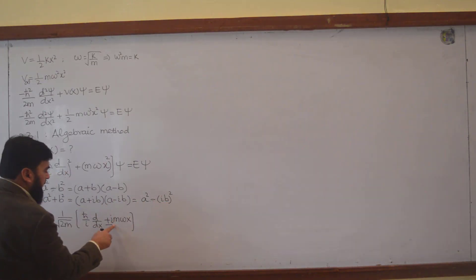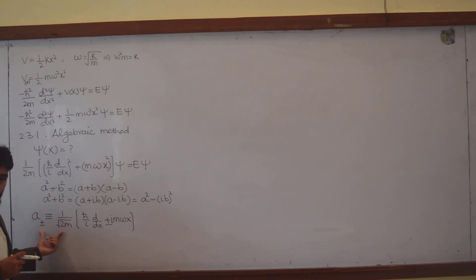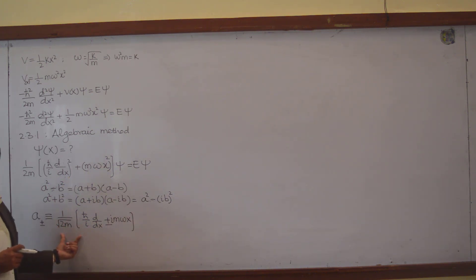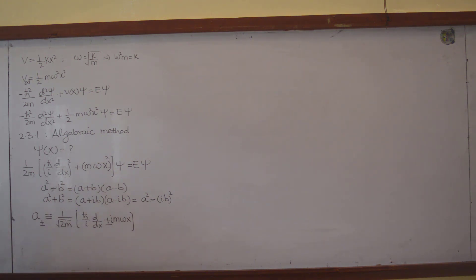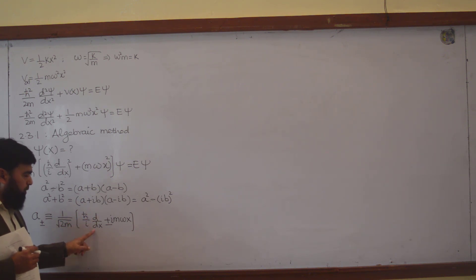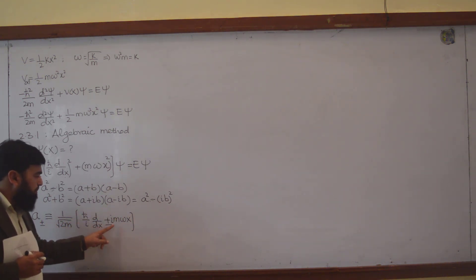Here with B we will write I — this is our B. We will write I with it, and these we define like in our algebraic solution. A plus is equal to ℏ/i times d/dx plus this one. A minus is equal to this with a minus sign.